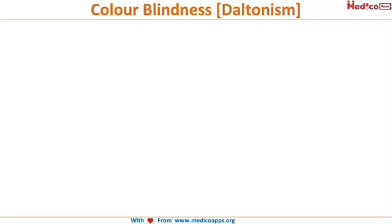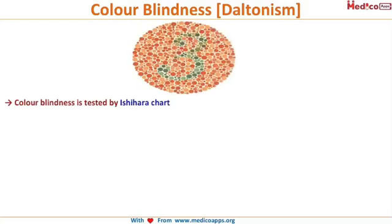This condition is called color blindness, named after the scientist who discovered it. He published the first paper on color blindness — his name is Dalton — and we call it Daltonism. Are you all able to see the number 3? If yes, congratulations, you do not have color blindness.